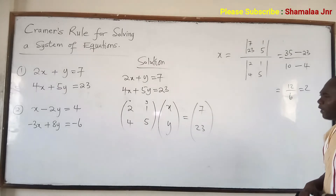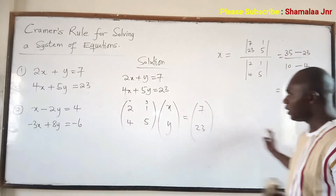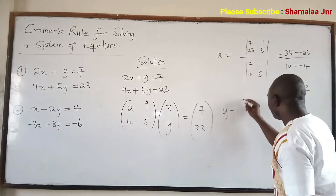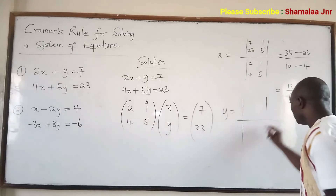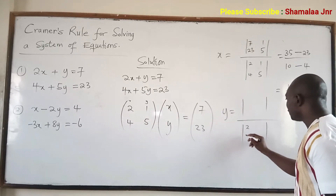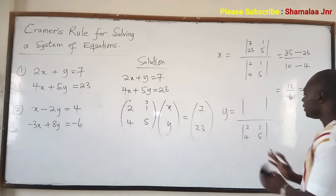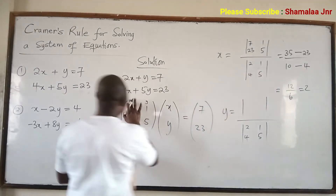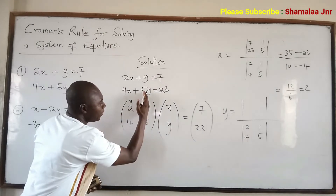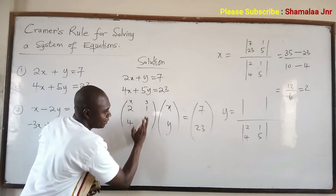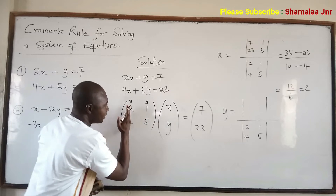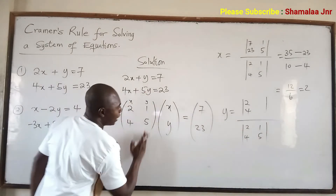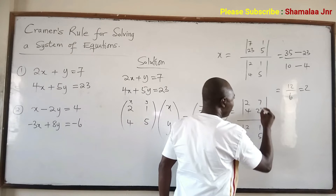So the value of x is 2. Now, what about the value of y? The denominator does not change — it is still the determinant of the original matrix. But because you are finding the value of y, you replace the y-column — 1 and 5 — with the right-hand side values 7 and 23, while keeping x-column values 2 and 4.